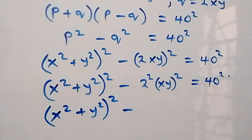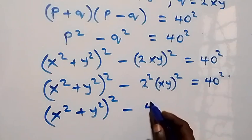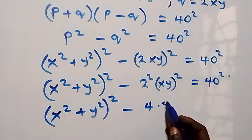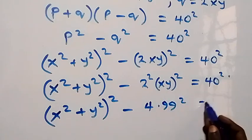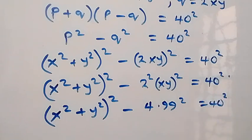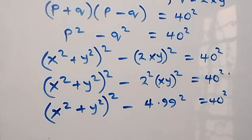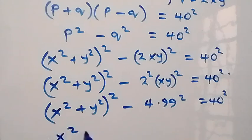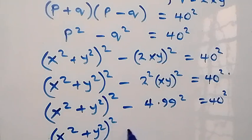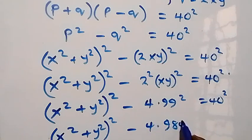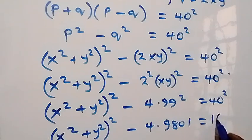2 squared is 4, and 4 times 99 squared. Now 99 squared is 99 times 99 which is 9801, so we have (x squared plus y squared) all squared minus 4 times 9801 equals 40 squared. That is 4 times 9801 equals 39204, and 40 squared is 40 times 40 which is 1600.